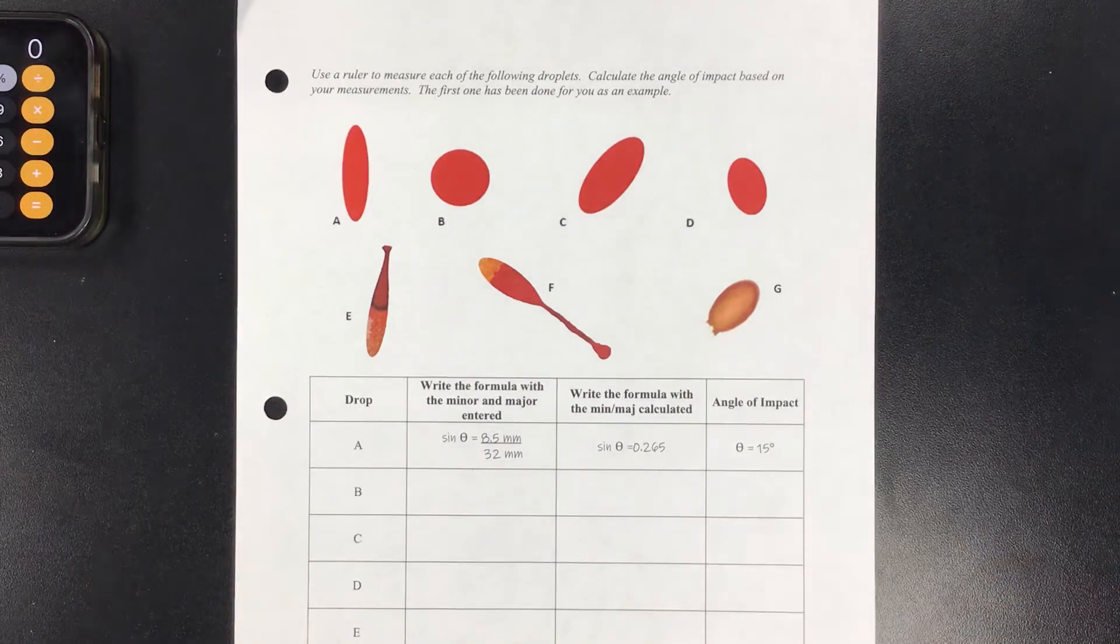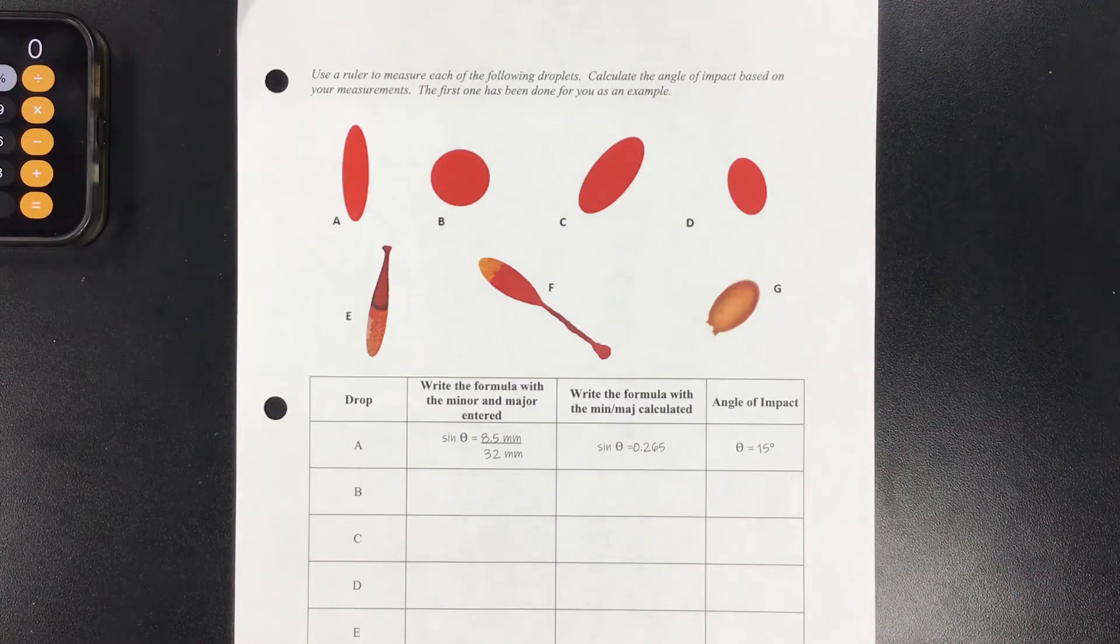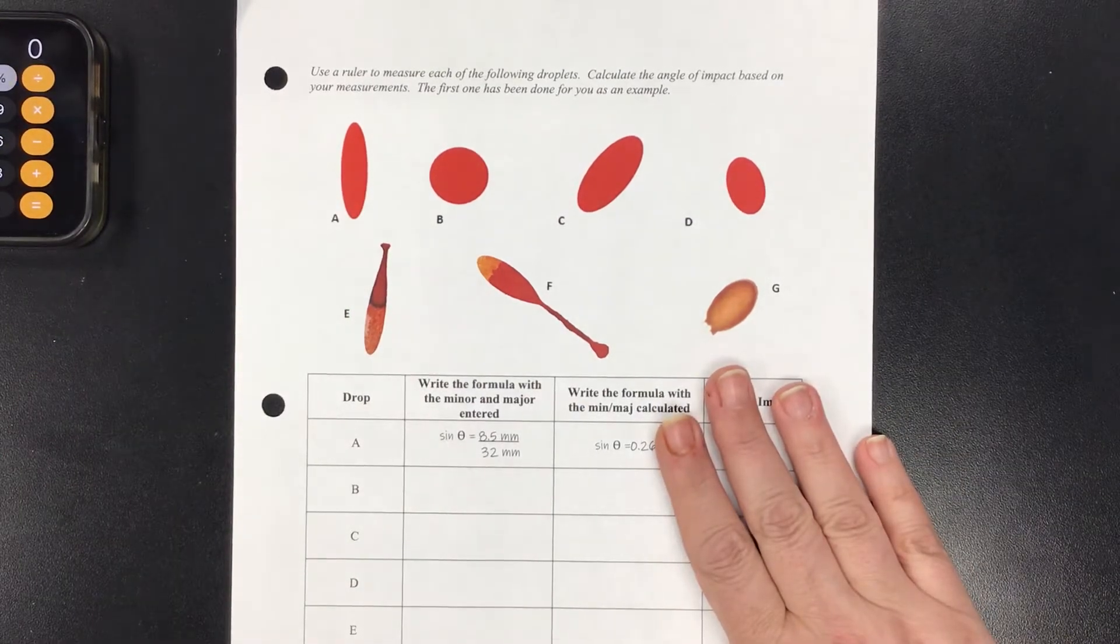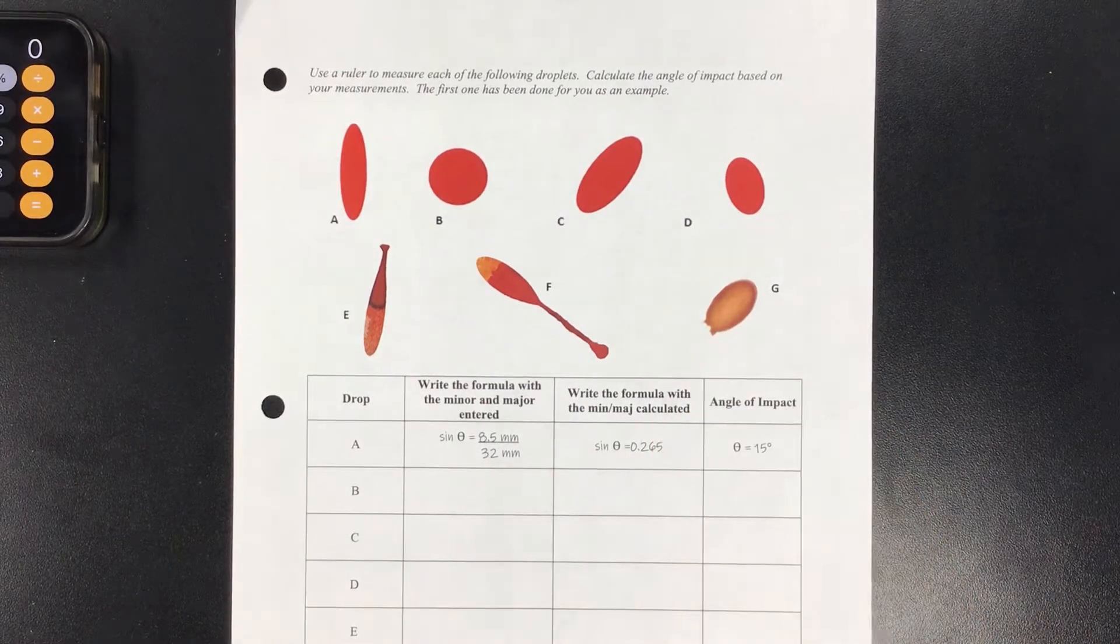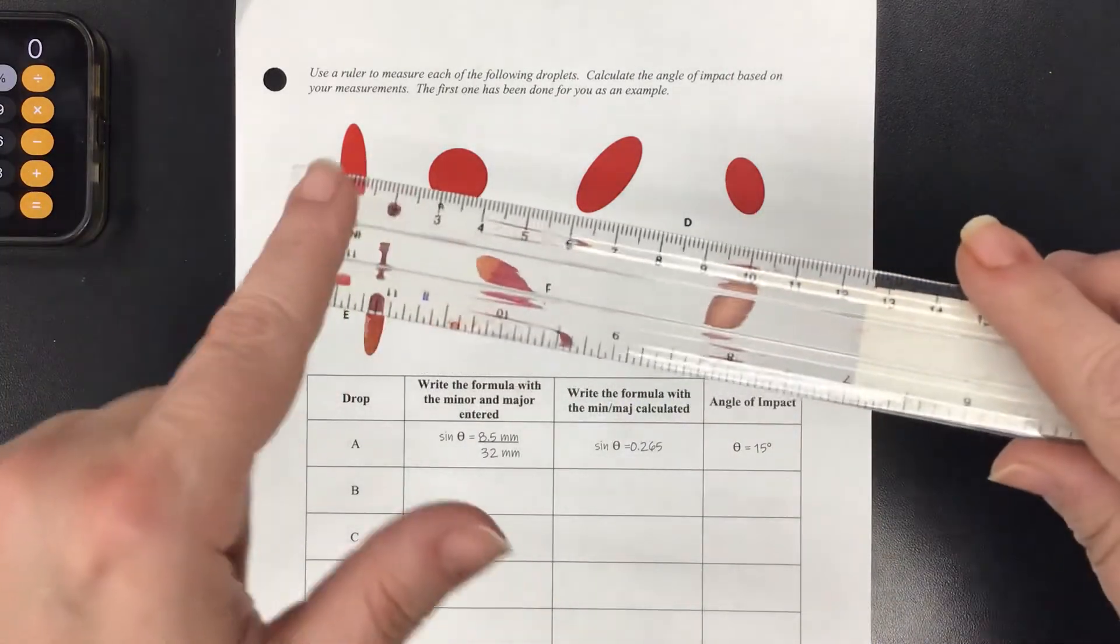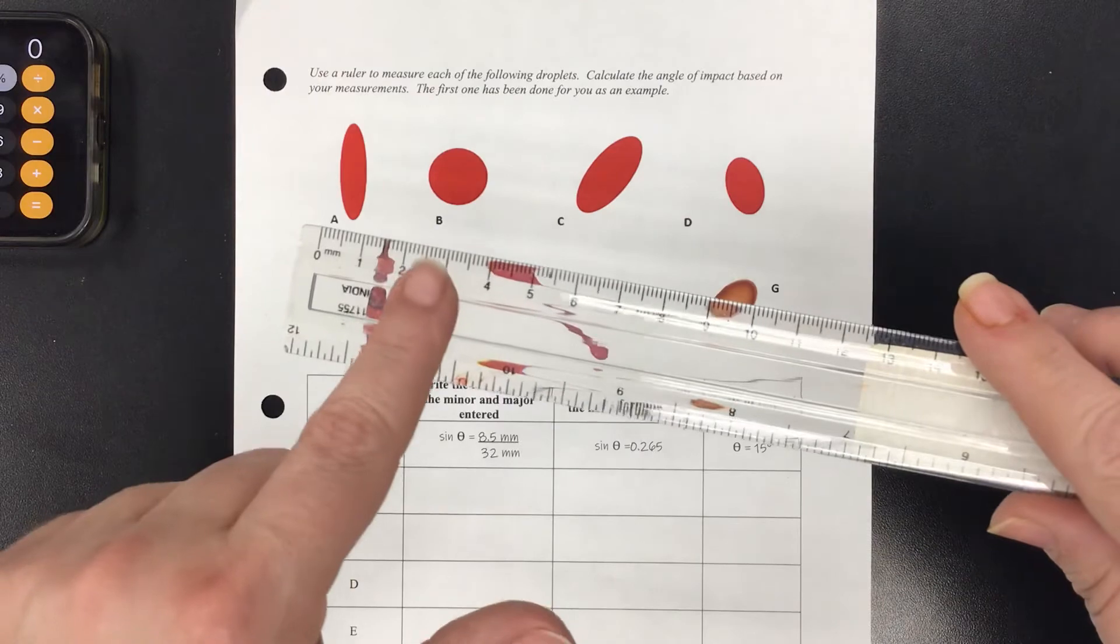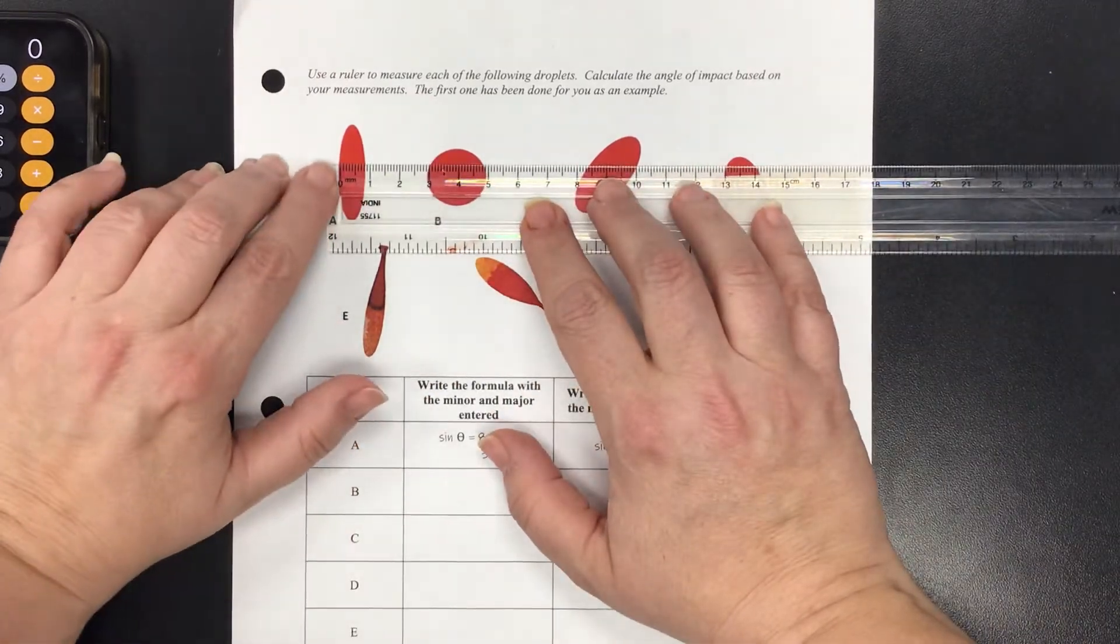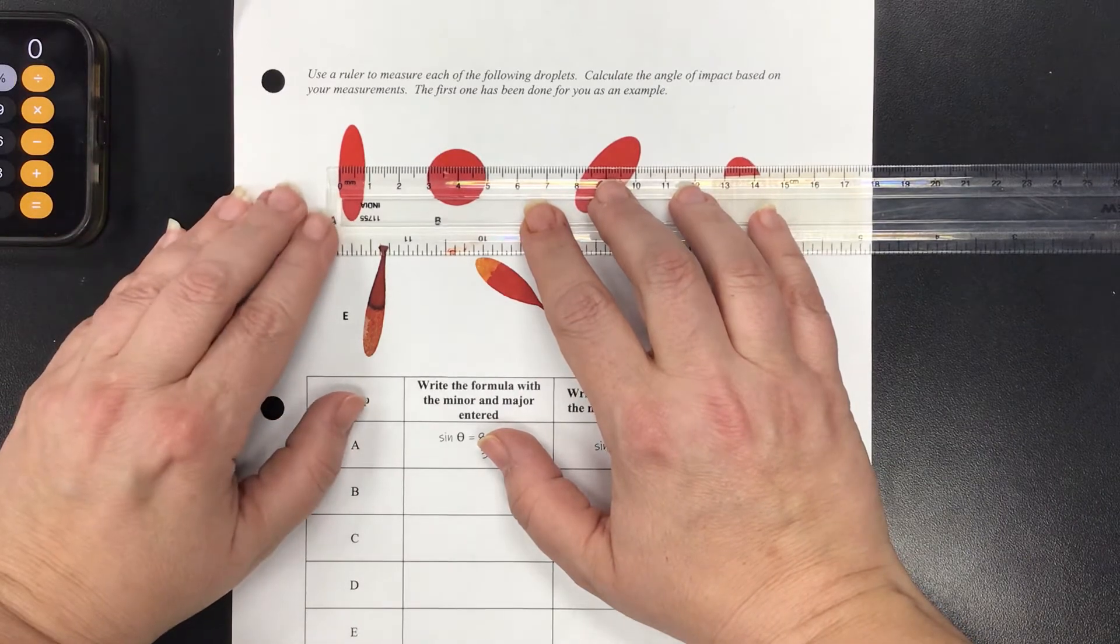Now my next step is I'm going to find the minor measurement on my blood droplet. So I'm going to start with blood droplet A so that you can see where I got my example answers from. I'm going to take my ruler and make sure that I'm looking at the metric side where there's millimeters. I'm just going to line up this zero line and try to find the waist of the blood drop.